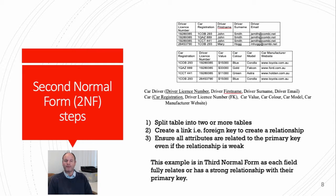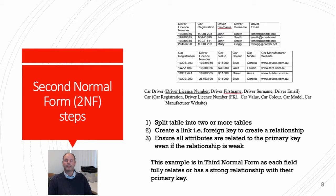In the second normal form rule, it says that each non-key field, also called an attribute, should be functionally dependent on the primary key. That means each field should have a connection to the primary key, though it may be a weak one. In this case, all of the attributes have a very strong connection to their associated primary key, so this table is also in third normal form. We will look at transitive dependencies in more detail in our next example.